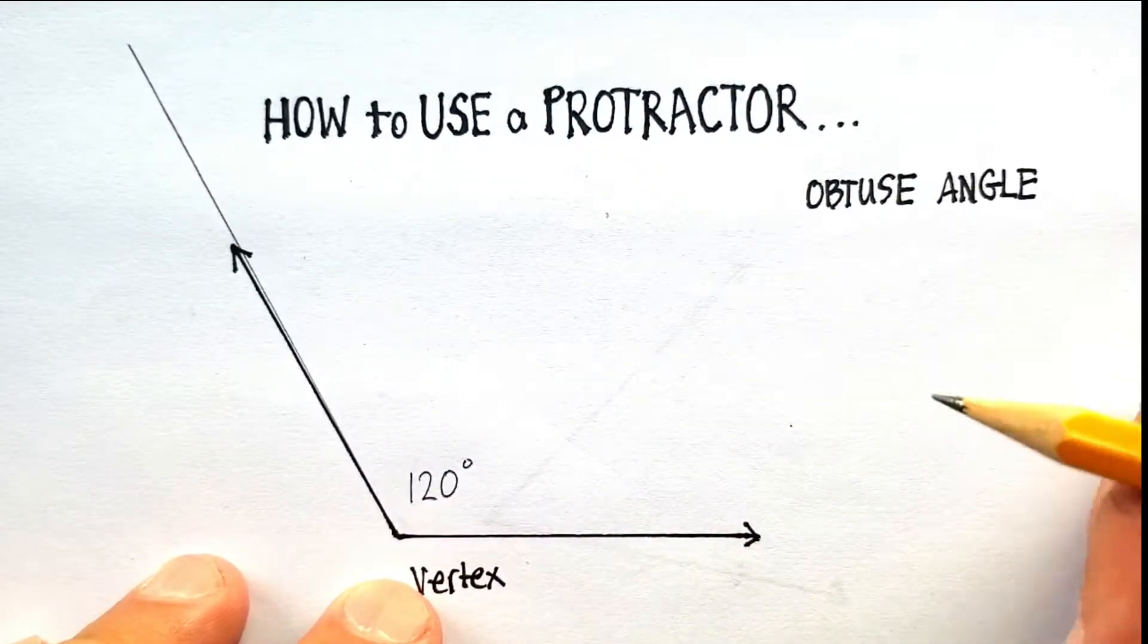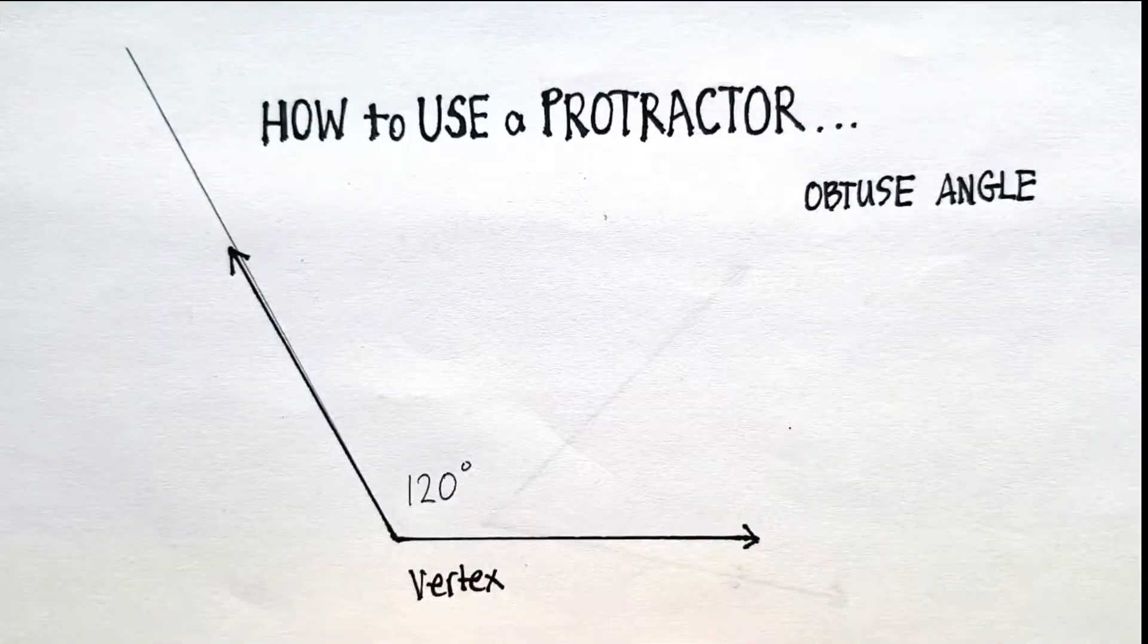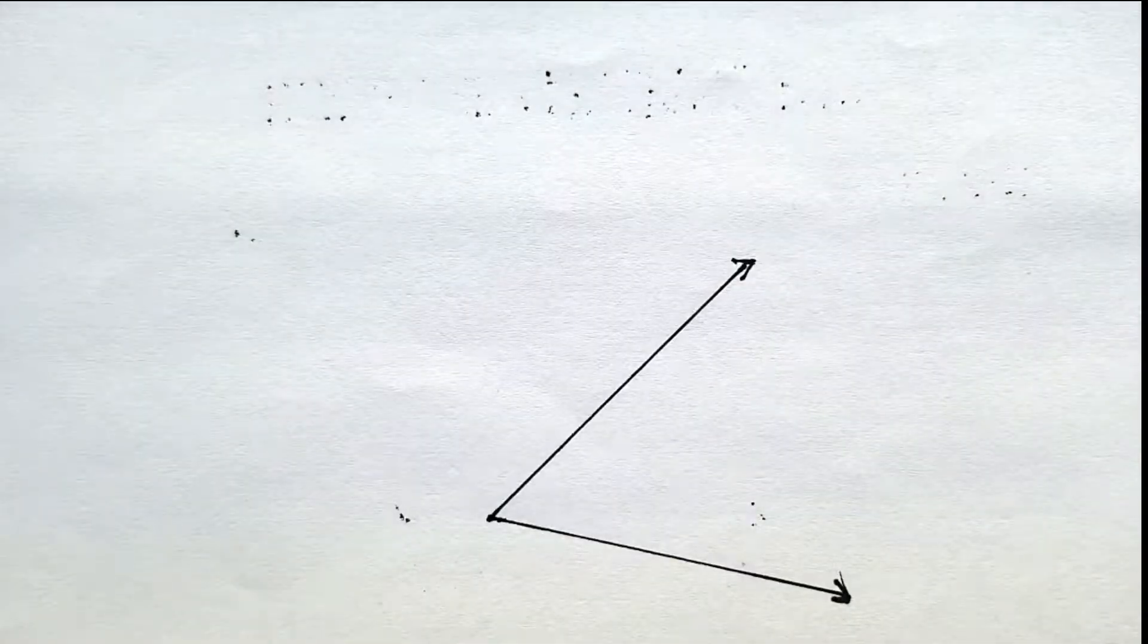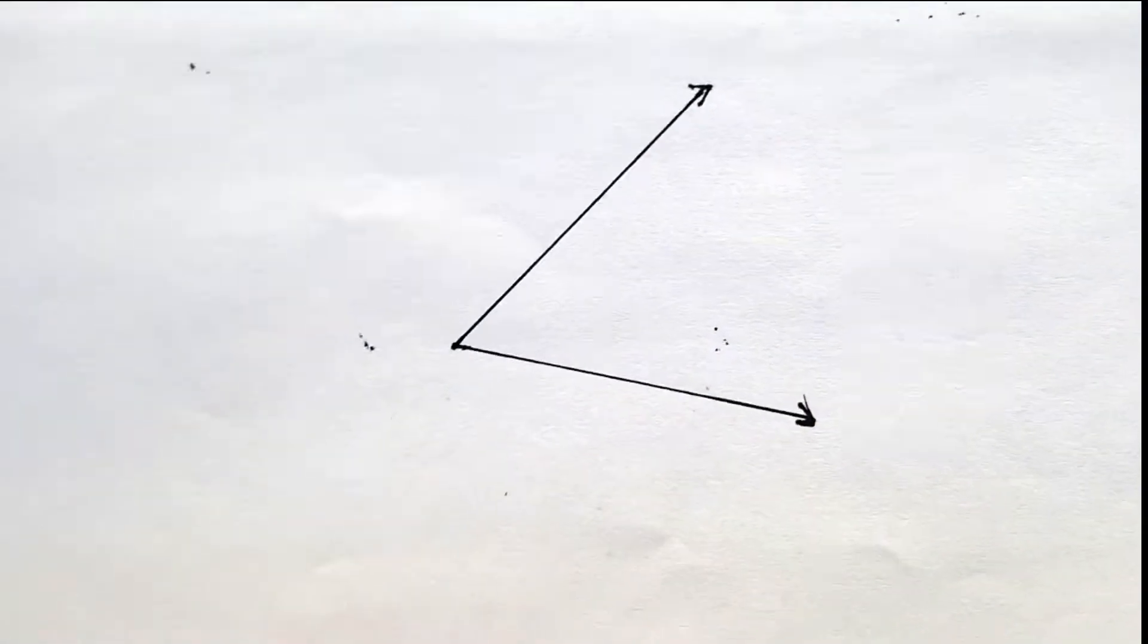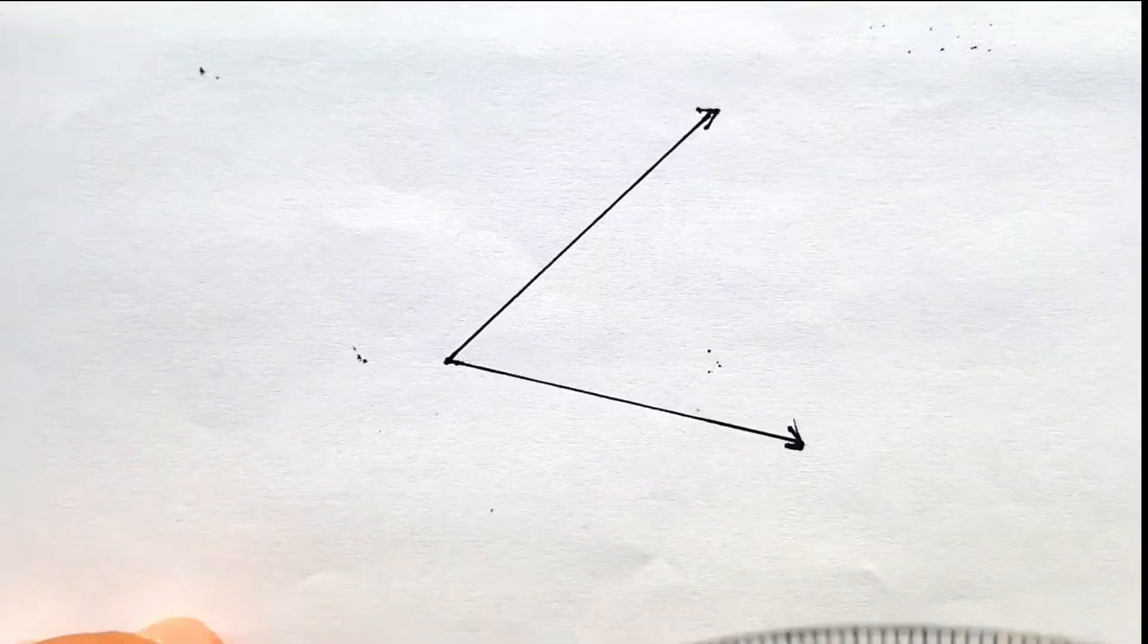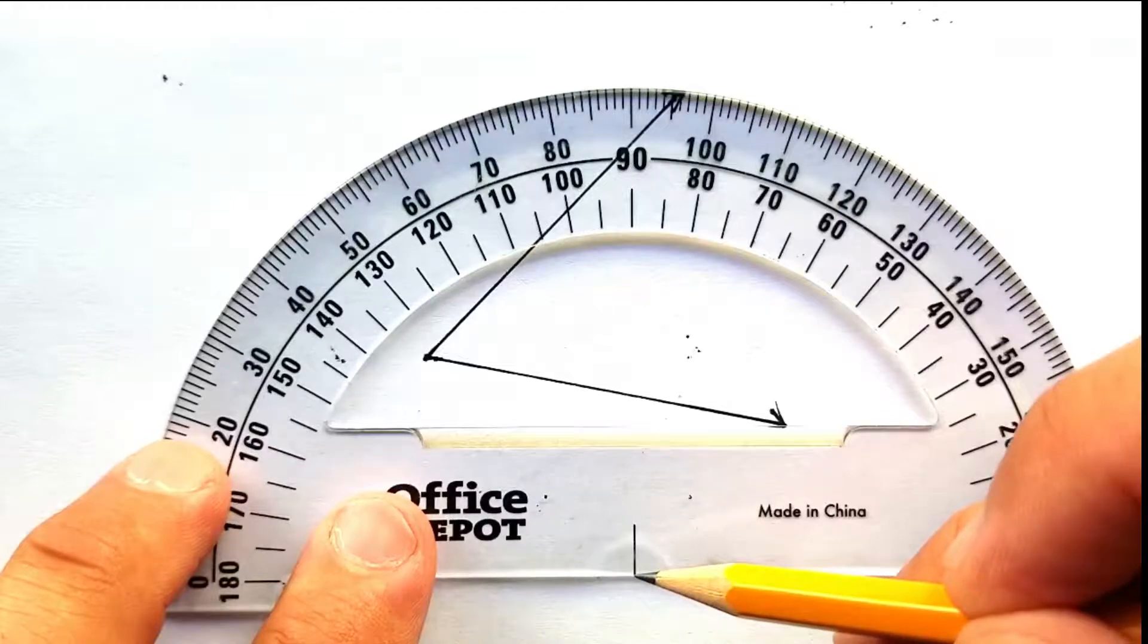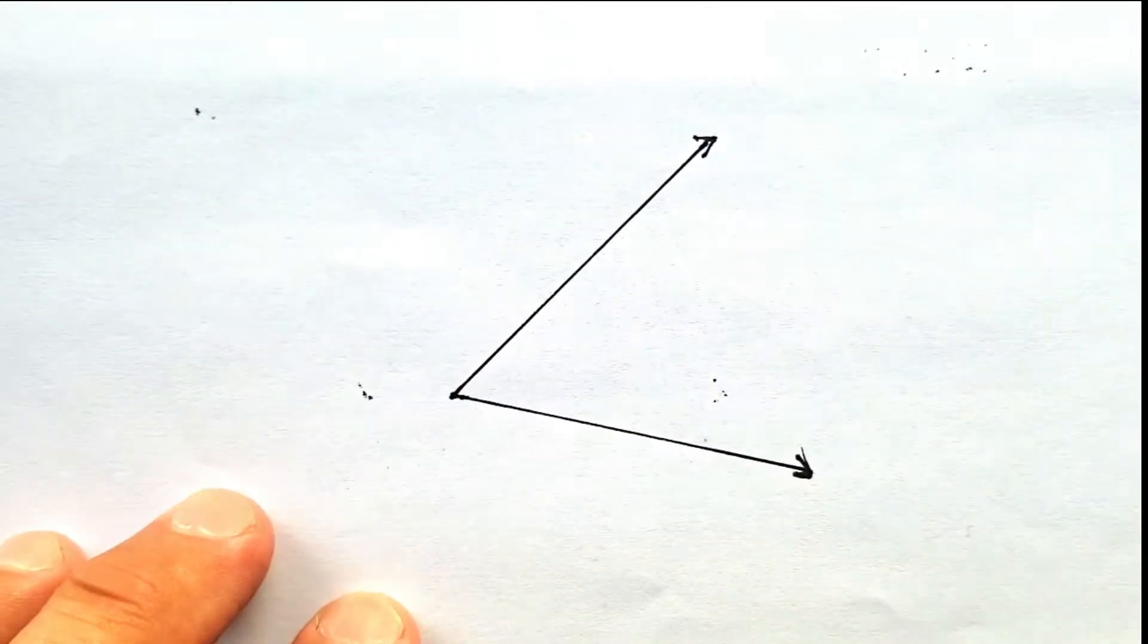Now, let's try this exact same procedure with a different type of protractor and a different angle. So, I'm going to use what I call an acute angle. And I'm going to use a protractor that doesn't have a little circle down there at the bottom.